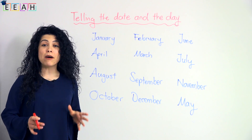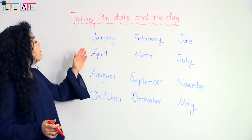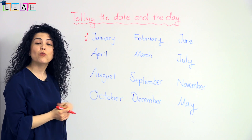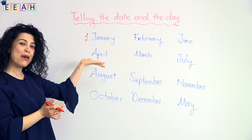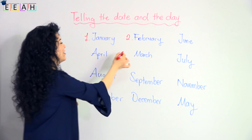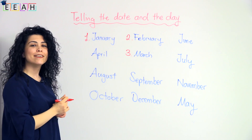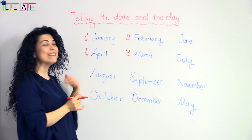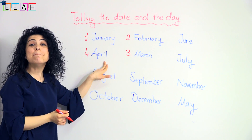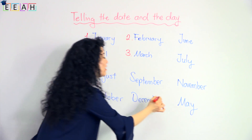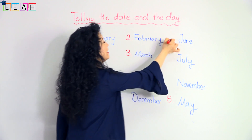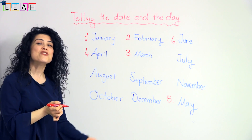Let's learn the months of the year now. The first month of the year is January, then February, and March, April. What's number five? January, February, March, April, May. Next is June.